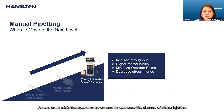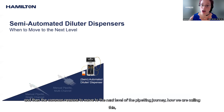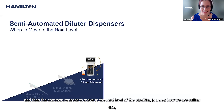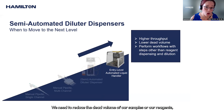Additional reasons include minimizing operator errors and decreasing the chance of stress injuries. After covering manual pipettes and semi-automated diluters, the common reasons to move to the next level of the pipetting journey are: needing higher throughput, needing to reduce the dead volume of samples or reagents.